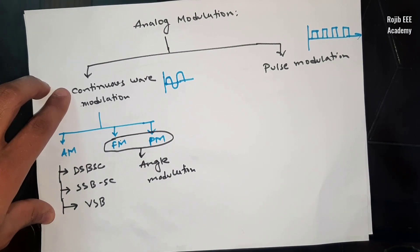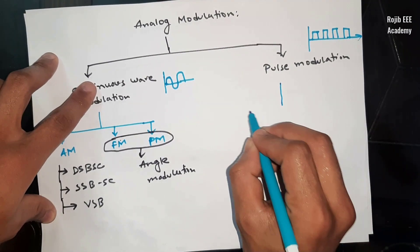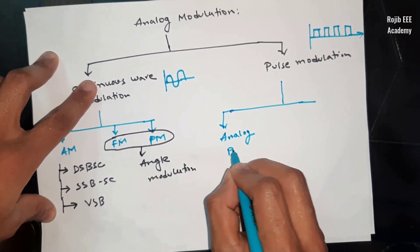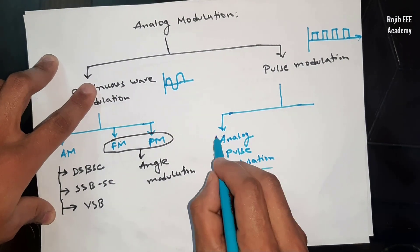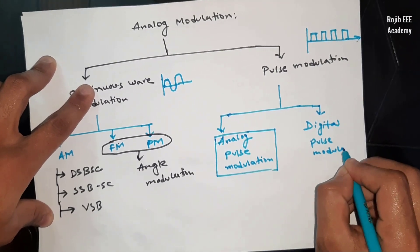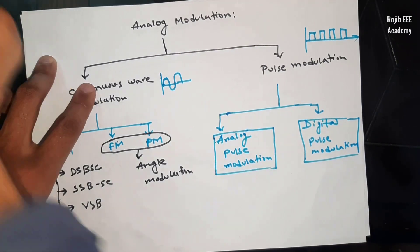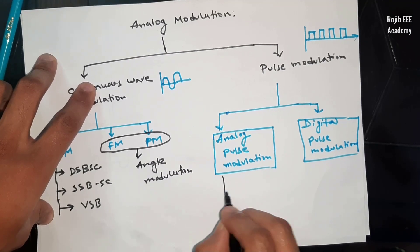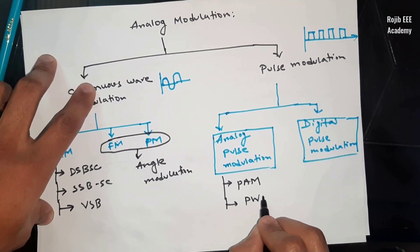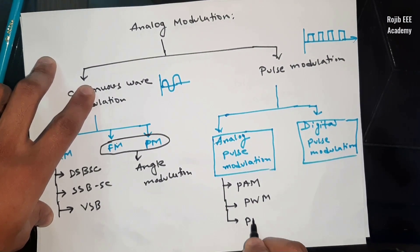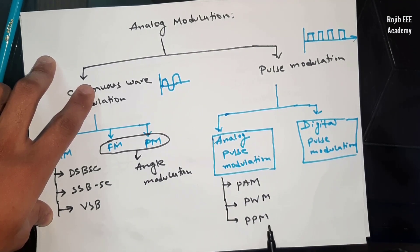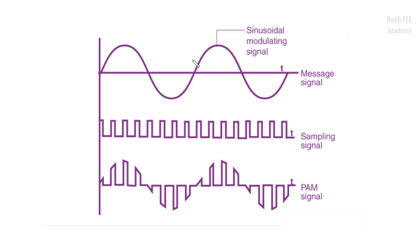Now, pulse modulation is divided into analog pulse modulation and digital pulse modulation. Under analog pulse modulation, we have three types: 1. PAM — Pulse Amplitude Modulation, 2. PWM — Pulse Width Modulation, and 3. PPM — Pulse Position Modulation.